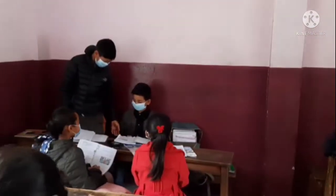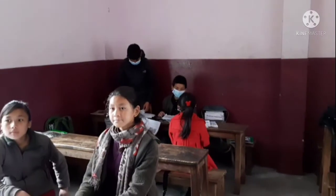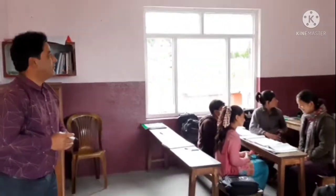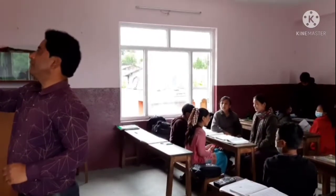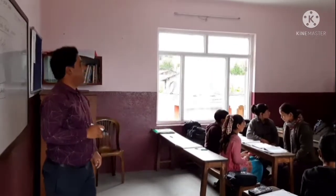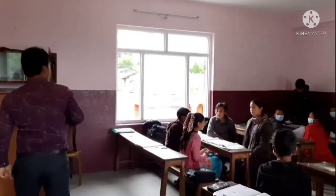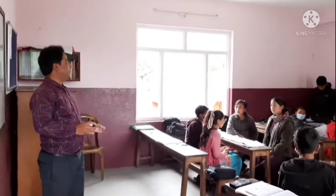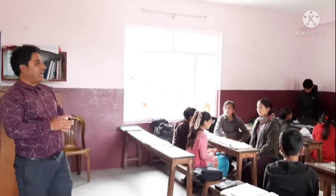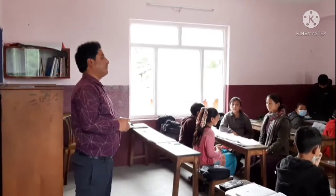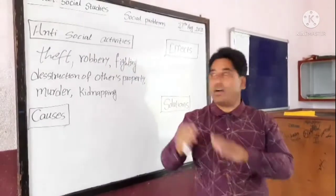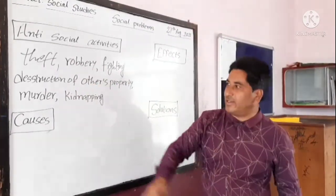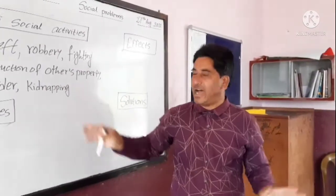Sanjee, what are the antisocial activities? Fighting, destruction of others' property, kidnapping, murder. These are some antisocial activities existing in different societies. According to this group, antisocial activities are: fighting, destruction of others' property, murder, and kidnapping. These are the antisocial activities.